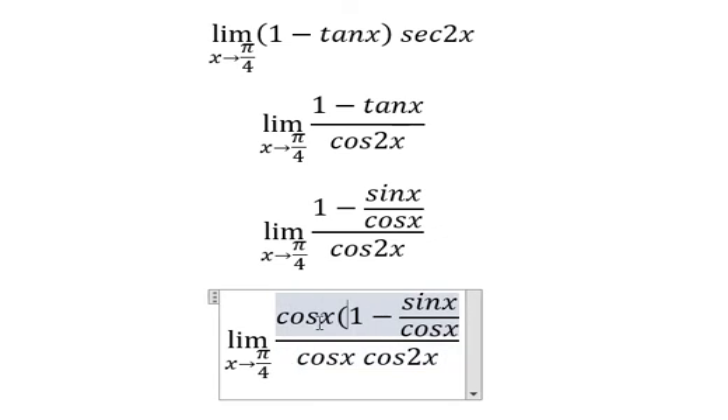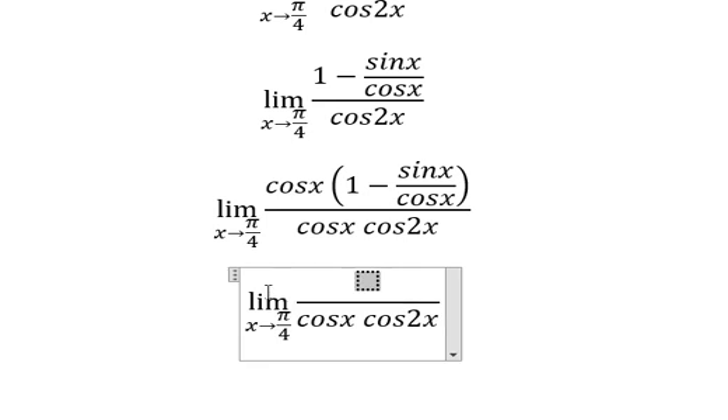Next, we multiply cos(x) on numerator and denominator. So with cos(x) times one minus sin(x) over cos(x), we have cos(x) minus sin(x).